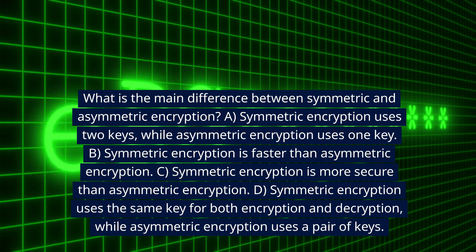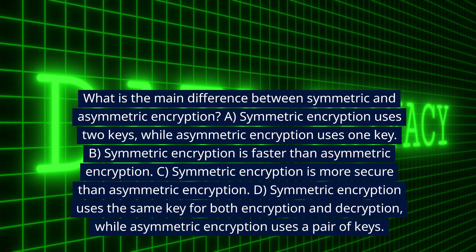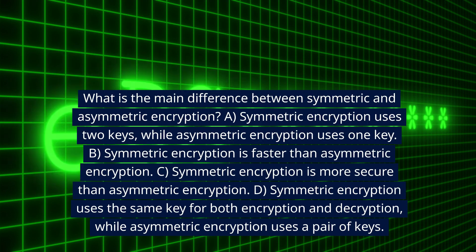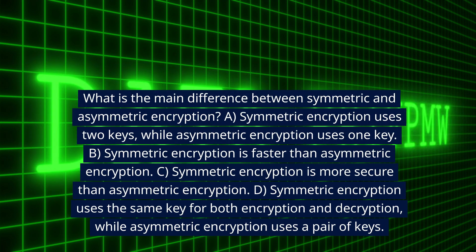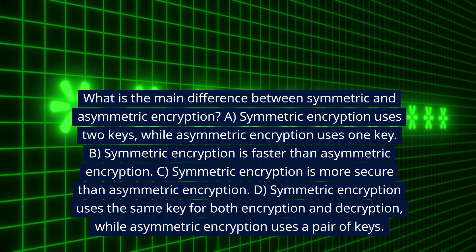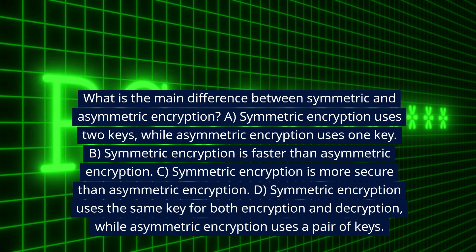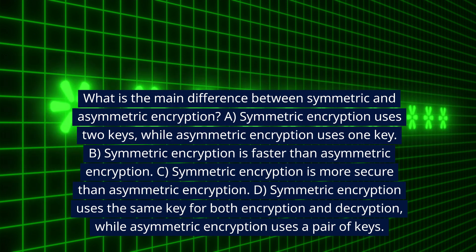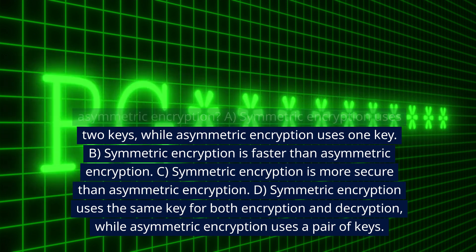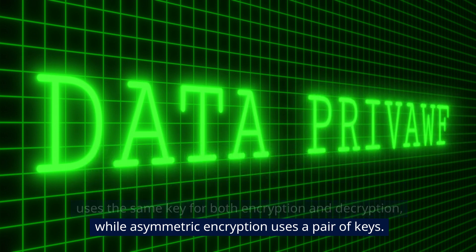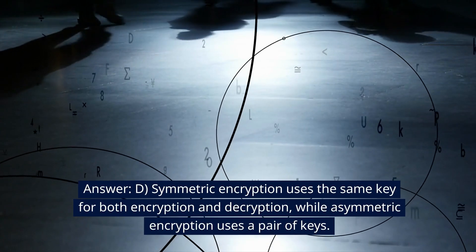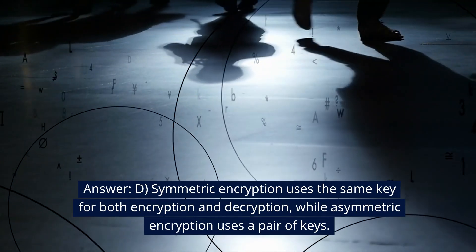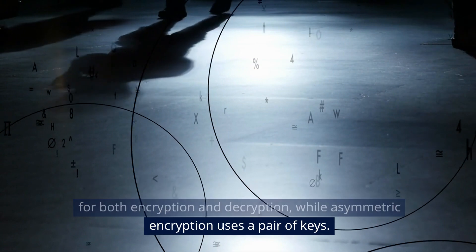What is the main difference between symmetric and asymmetric encryption? A. Symmetric encryption uses two keys, while asymmetric encryption uses one key. B. Symmetric encryption is faster than asymmetric encryption. C. Symmetric encryption is more secure than asymmetric encryption. D. Symmetric encryption uses the same key for both encryption and decryption, while asymmetric encryption uses a pair of keys. Answer: D. Symmetric encryption uses the same key for both encryption and decryption, while asymmetric encryption uses a pair of keys.